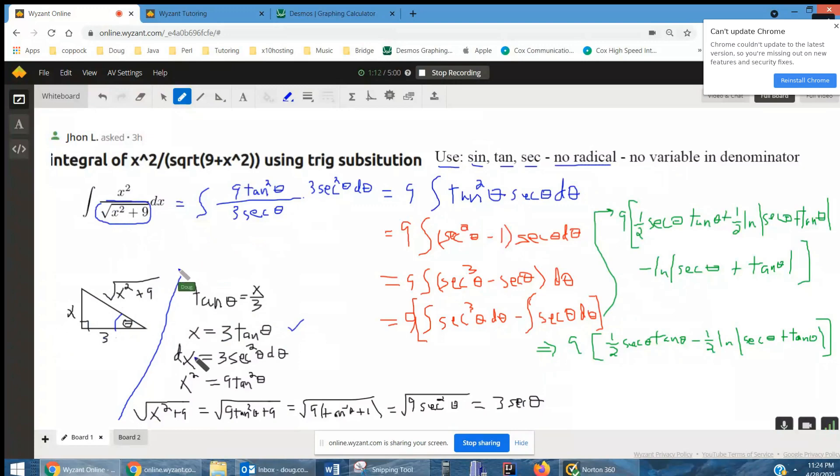The dx equals 3 secant squared theta d theta. x squared equals 9 tangent squared theta.